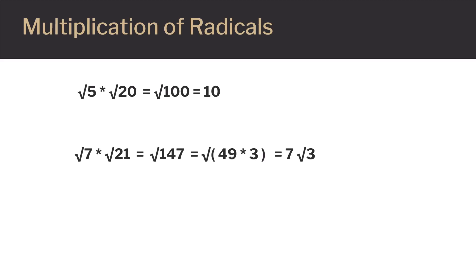Next, we'll multiply the square root of 7 times the square root of 21. We can move the multiplication under one radical, and this becomes the square root of 7 times 21, or the square root of 147.